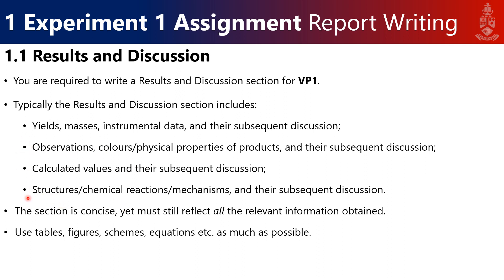Bullet points two and four link strongly in Experiment 1, and all of these will become more applicable in later experiments. Keep it concise — your results section must reflect all relevant information obtained, but you need to judge whether something is important. The best way to do that is to use tables, figures, and schemes, because you can quickly see in a table if you're mentioning something 17 times and whether it becomes redundant. My biggest tip is to use tables, figures, schemes, and equations to summarize your information as best as possible.